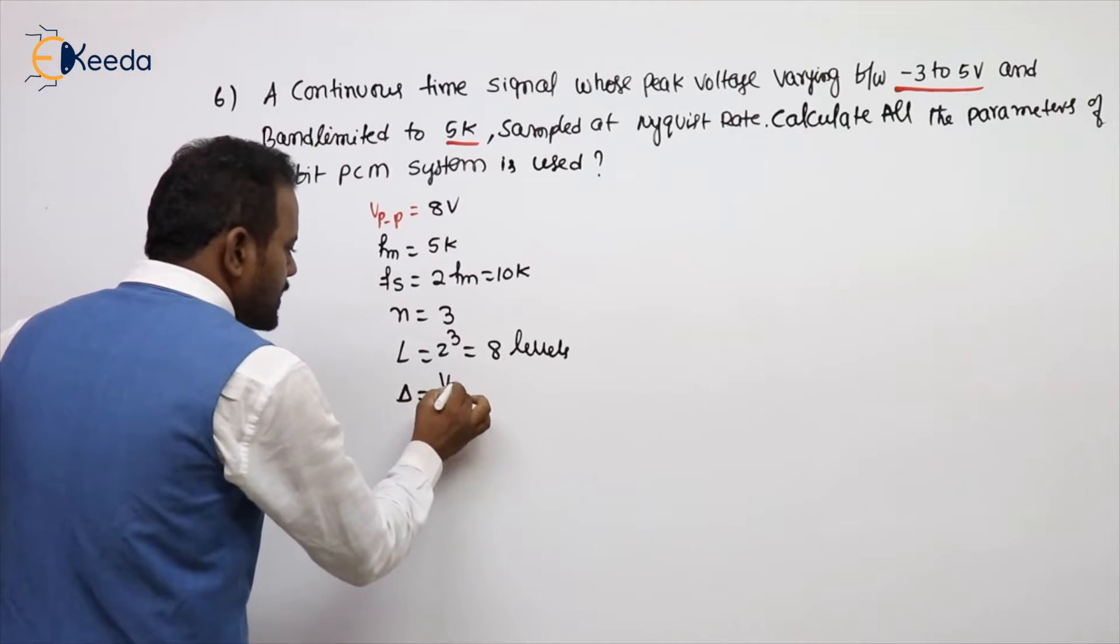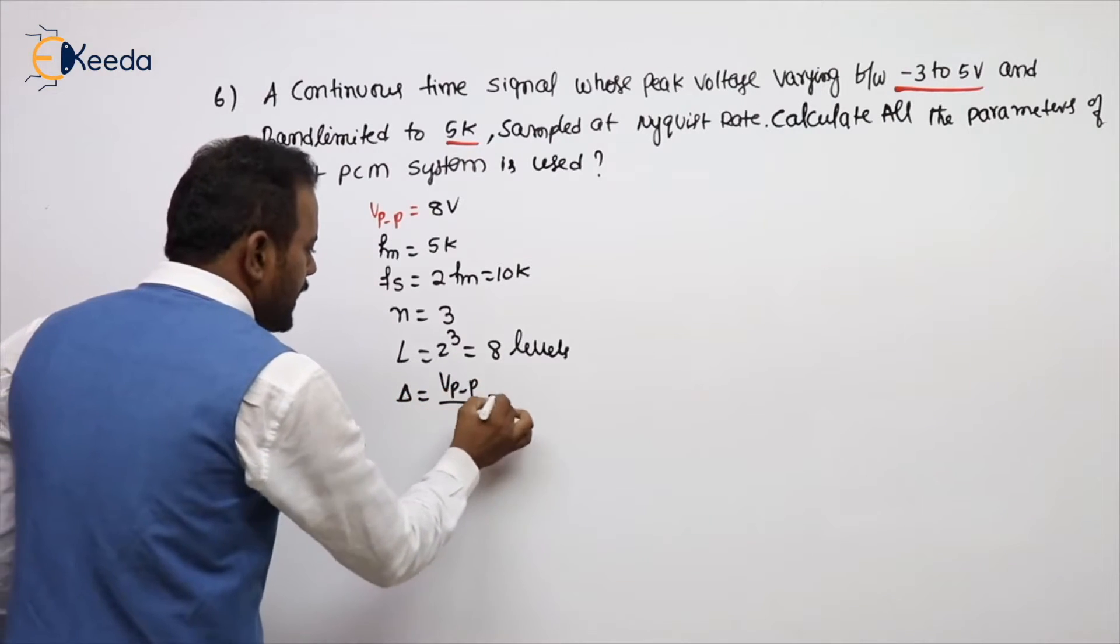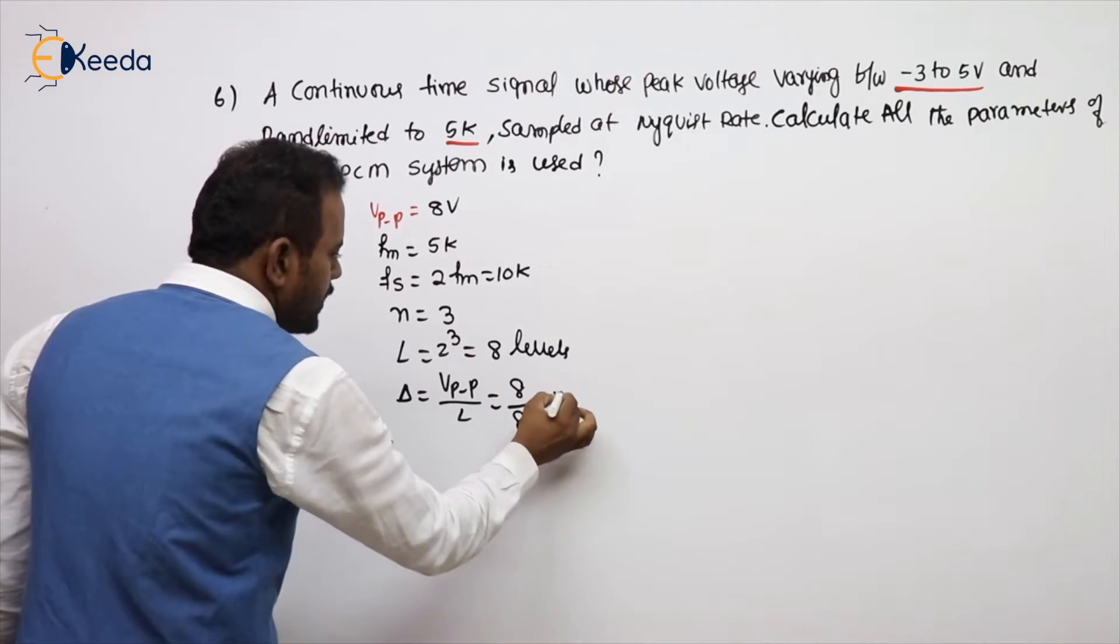Delta, what is the Delta sir? V peak to peak by L. V peak to peak is 8, 8 by 8, 1 volt.